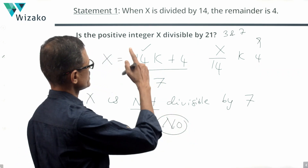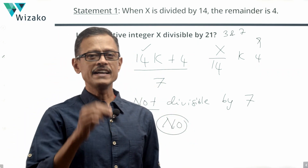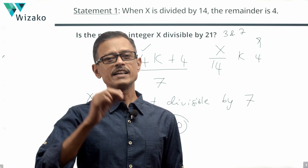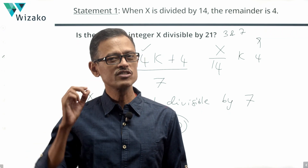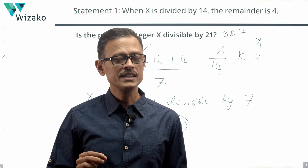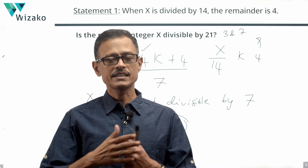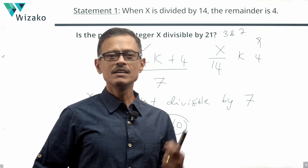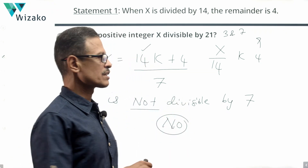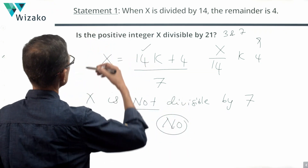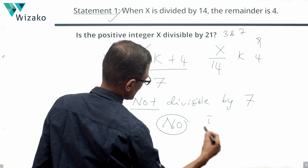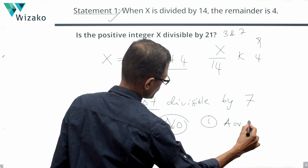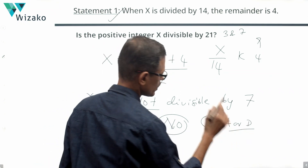We have a conclusive no as the answer from Statement 1. Any x that leaves a remainder of 4 when divided by 14 can never be divisible by 21. Statement 1 alone is sufficient, so our answer narrows down to A or D.